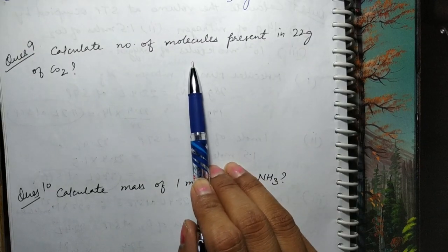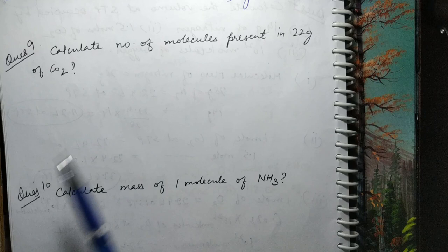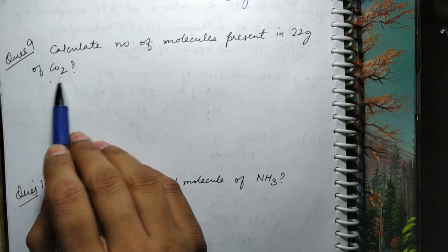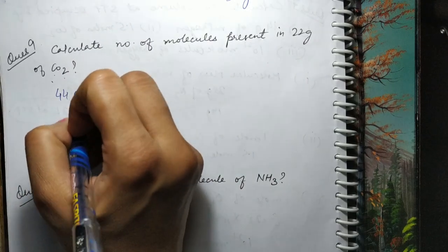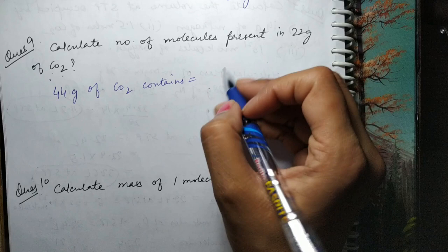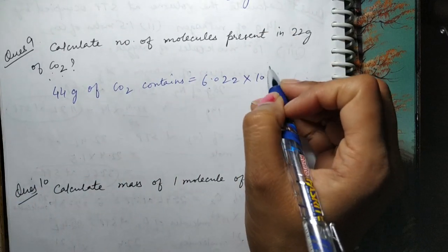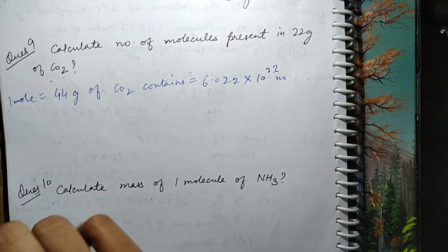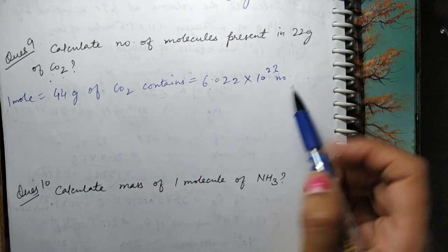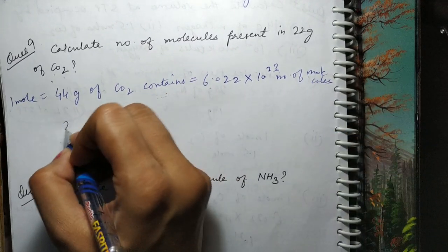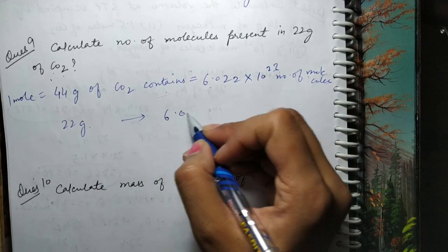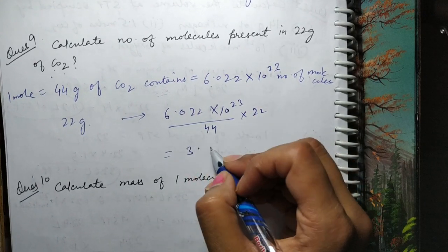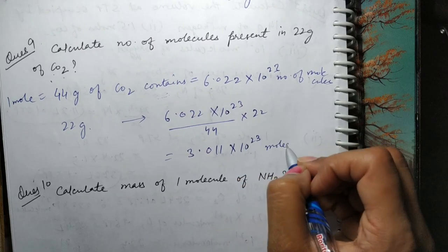Next question: calculate number of molecules present in 22 gram of CO₂. CO₂ ka molecular mass = 44 (12 + 16×2). 44 gram of CO₂ contains Avogadro's number of molecules. To 22 gram mein — yeh half hai — so answer = 3.011×10²³ molecules of CO₂.